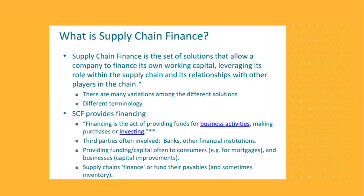When talking about supply chain financing, there are third parties involved — banks and other financial institutions do get involved. It's not necessarily between two parties; some solutions are between two parties, but generally speaking supply chain financing involves banks or other financial institutions. Supply chain financing provides funding capital often to consumers and businesses to fund their payables, sometimes their inventory. The funding or supply chain finance can be done for sellers or for buyers, as the liquidity situation or problem can be on either one of those ends.